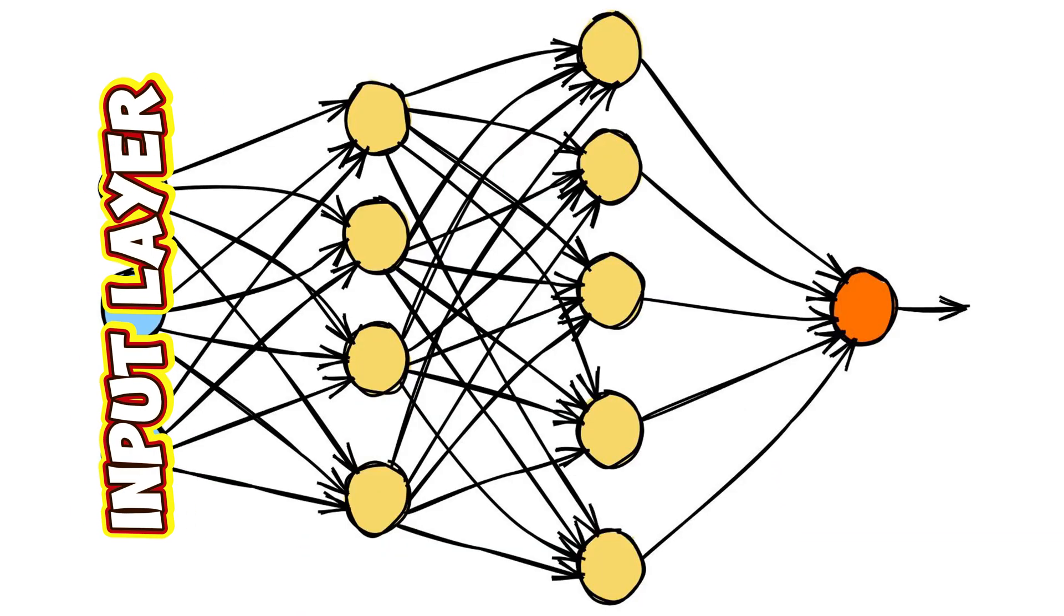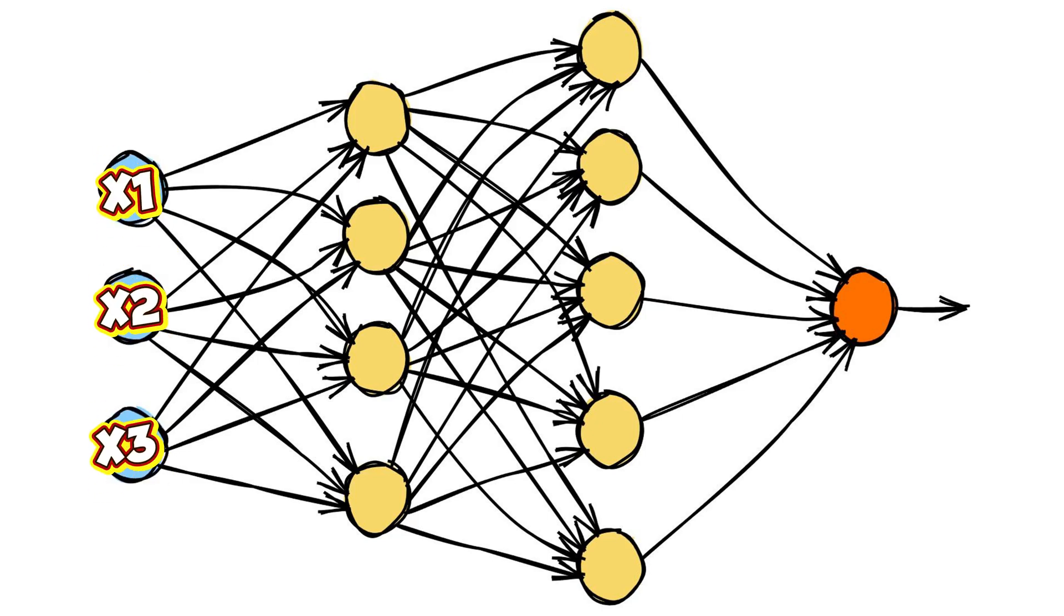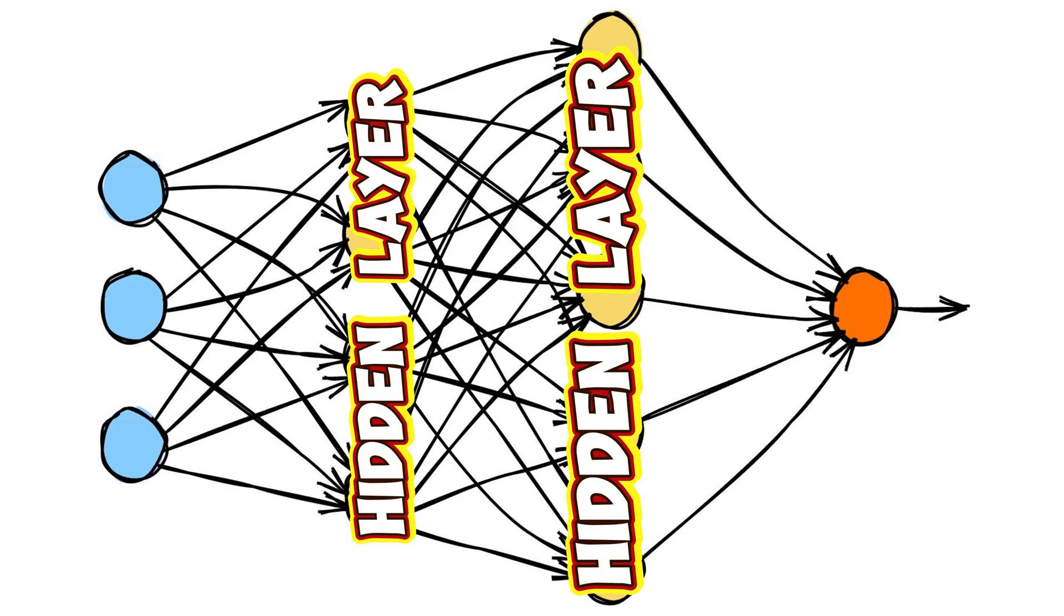This is the input layer. The input layer has just input numbers or independent variables. This is the output layer. These are hidden layers. The hidden layers and the output layer have neurons.